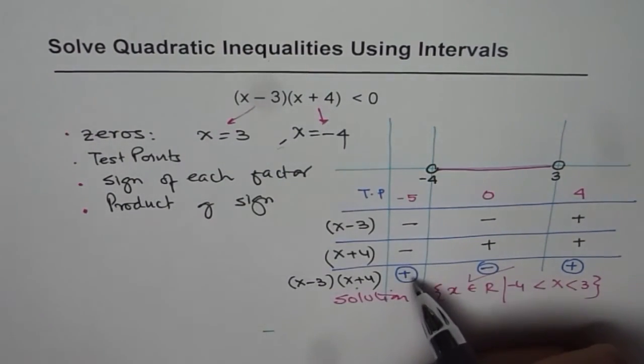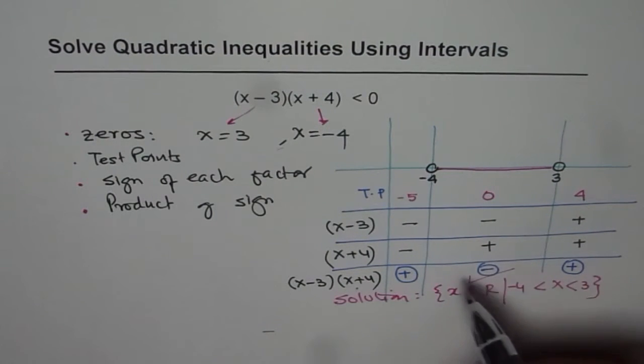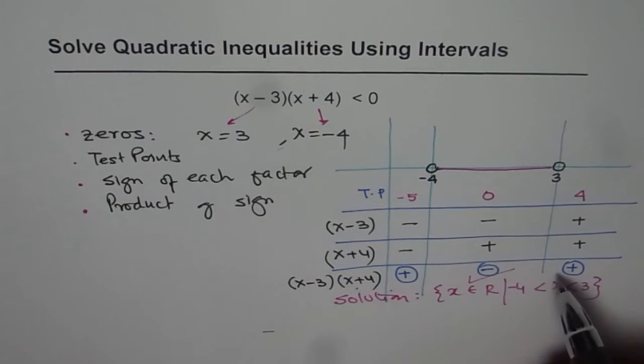Two negatives will give you positive. A positive and a negative, opposite signs will give you negative always. And same signs will give you positive.